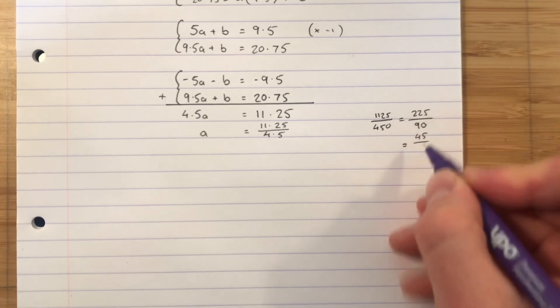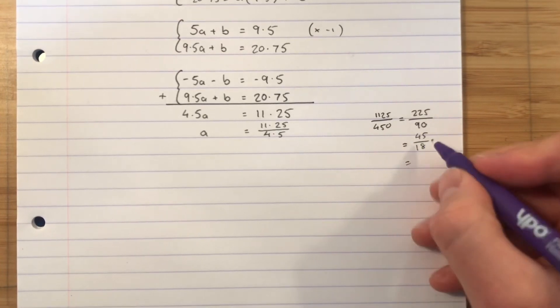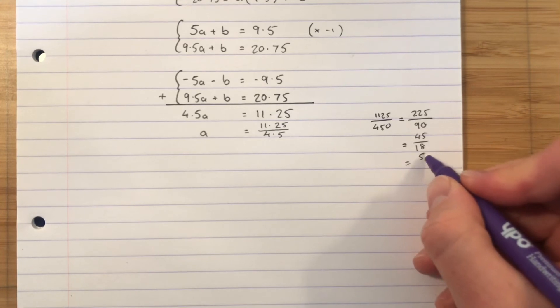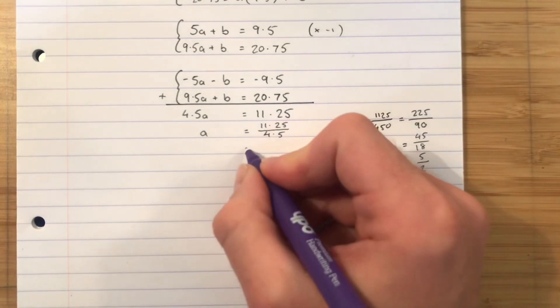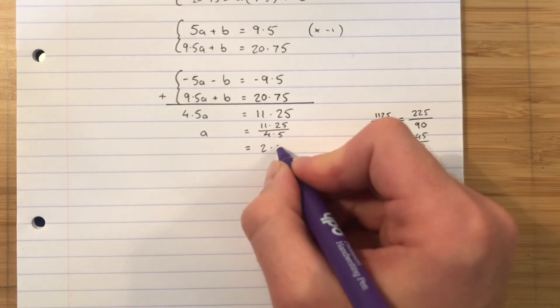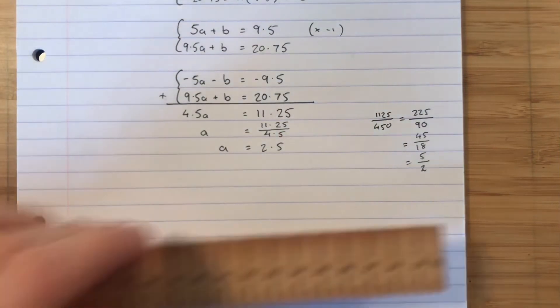They both divide by 9. So that divides by 9 to give me 5. That divides by 9 to give me 2. 5 over 2 is, as we thought, 2.5 is the value of A. So A equals 2.5. That's my first answer.